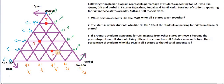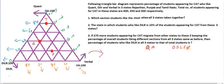We have to find from each state how many students liked quant, how many liked verbal, and how many liked DILR. Whenever you encounter such special graphs, the first thing you should do is convert it into another form which is very much readable — the best form is a table. So let's draw one table with columns: Quant, DILR, and Verbal.